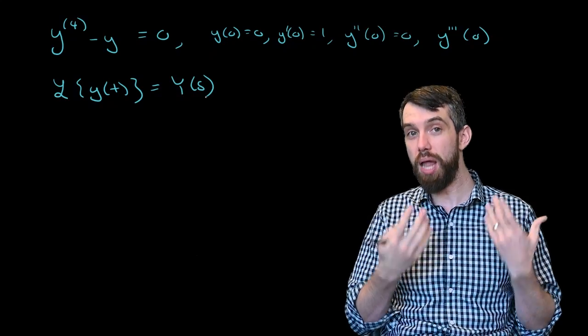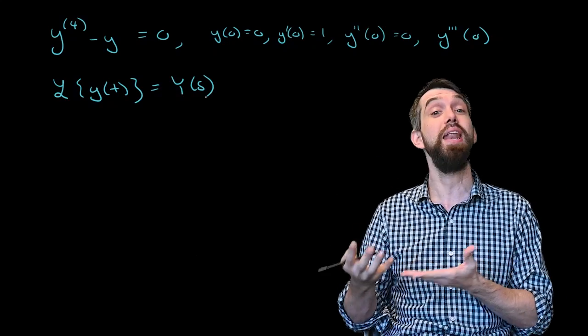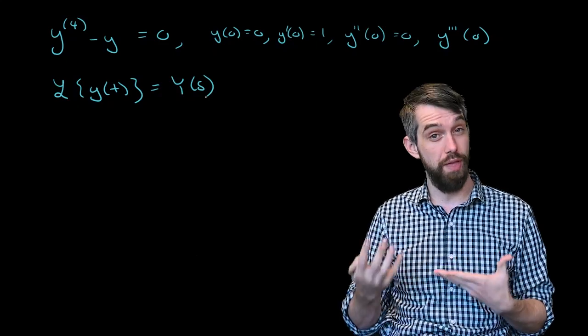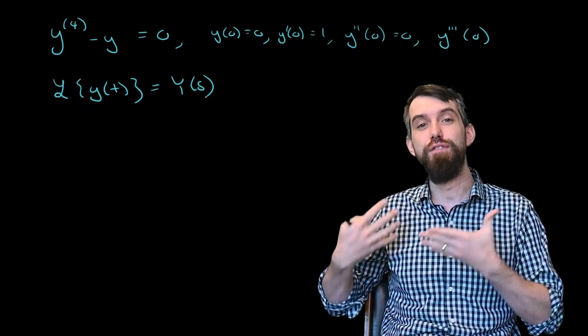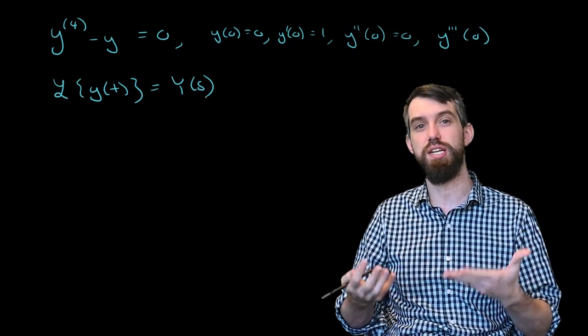The way this method works is I'm going to apply the Laplace transform which is going to convert this differential equation into an algebraic one. I'm going to solve that algebraic equation, and I'm going to try to use the method of inverting my Laplace transform to get back to a solution to this initial value problem.